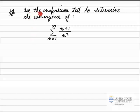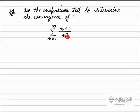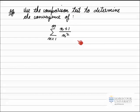In this example we've been asked to use the comparison test to determine the convergence of this series, the sum from n equals 1 to infinity of n plus 1 over n squared. I'll demonstrate that usually there are a number of different series we can compare our series to. Sometimes that allows us to use the comparison test and sometimes the comparison test breaks down. I'll first show a case where the series we choose doesn't work, and then show the correct series to use.